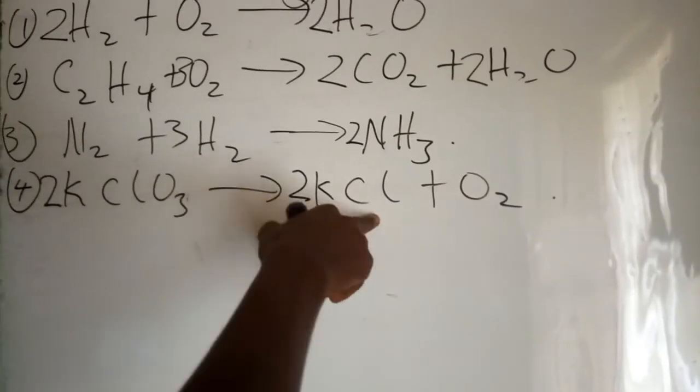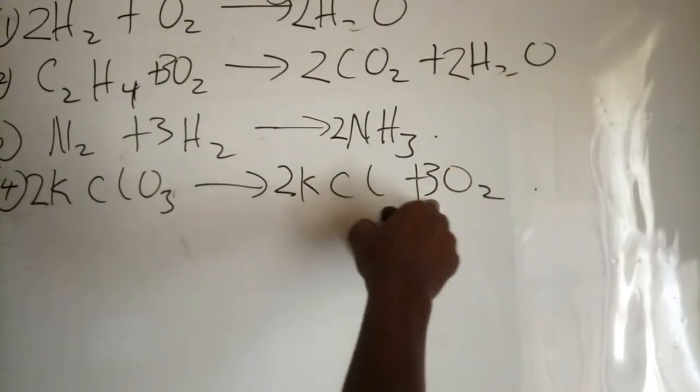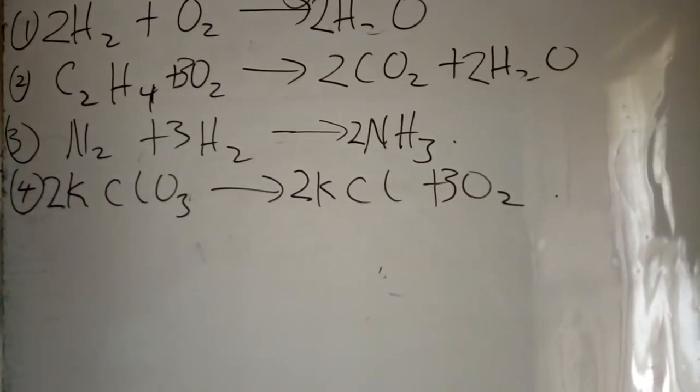Two molecules of potassium, two molecules of chlorine. Now there are six molecules of oxygen on the left. So you put 3 before O2. Three times two gives us six. We have six molecules of oxygen on each side. The balanced equation is 2KClO3 → 2KCl + 3O2.